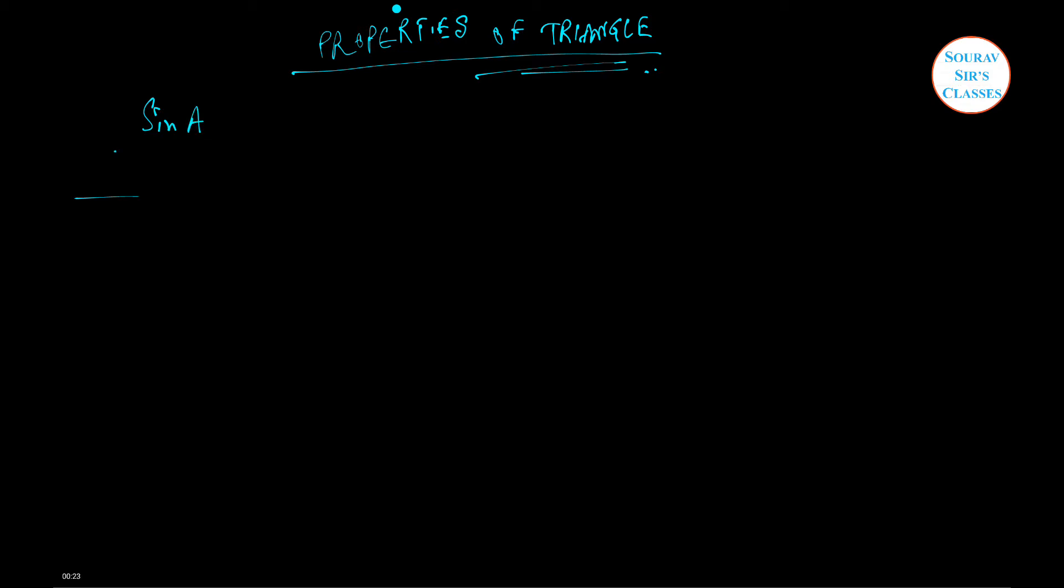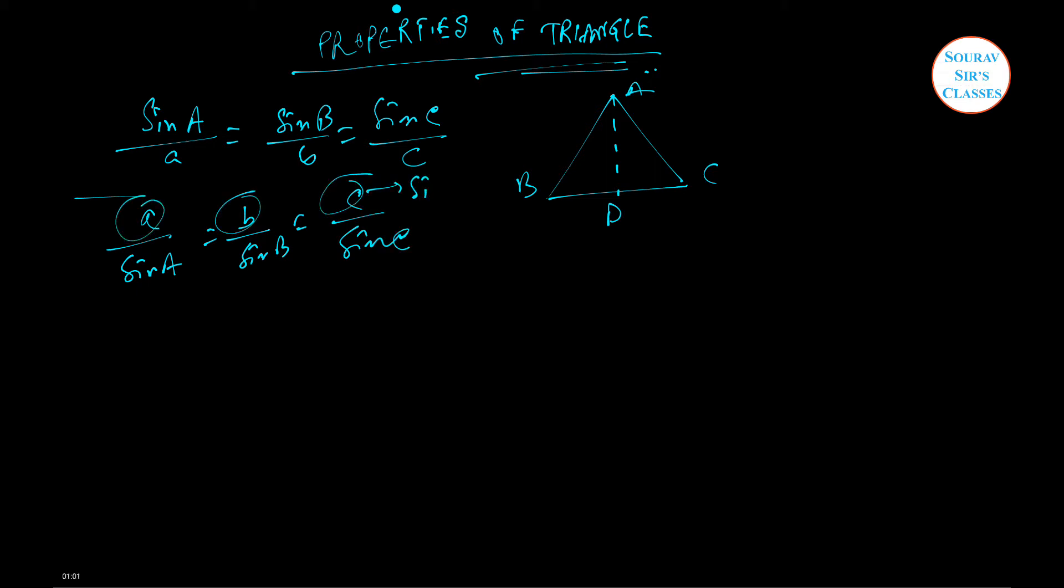Let's start with some old school things. For example, we know that in a triangle, sine A by a equals sine B by b equals sine C by c, where these are the angles and these are the sides. This particular thing can also be written in reverse order: a by sine A equals b by sine B equals c by sine C. In short, these are all sides and these are all angles.